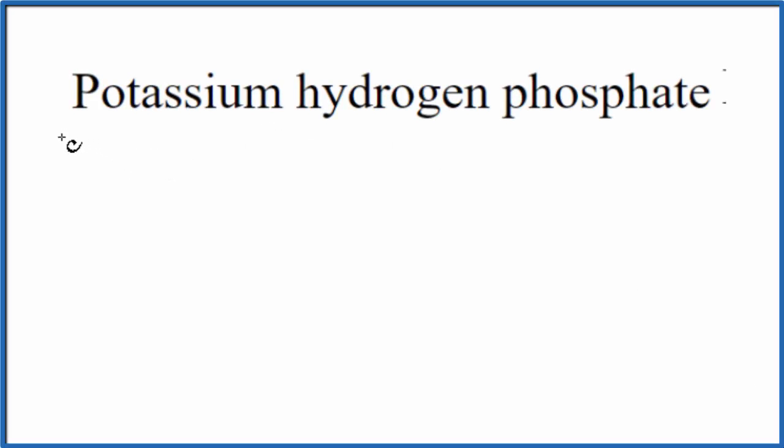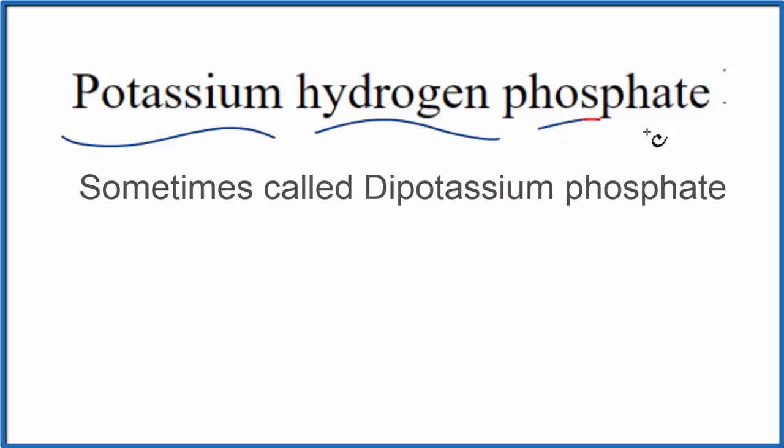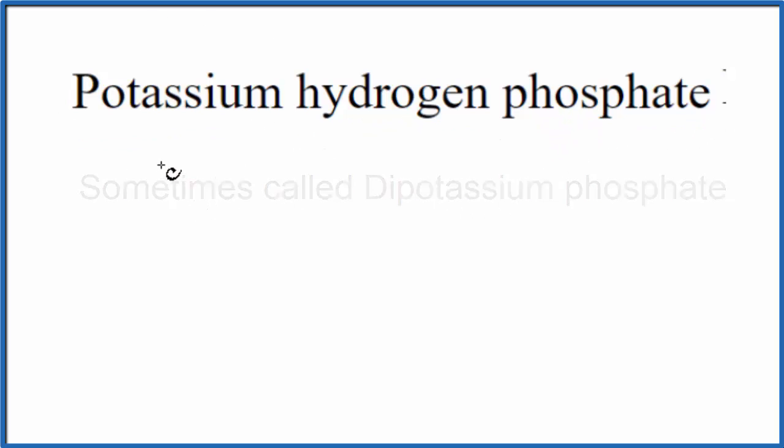In this video, we'll write the formula for potassium hydrogen phosphate. So let's first write the element symbol for potassium. That's just K.